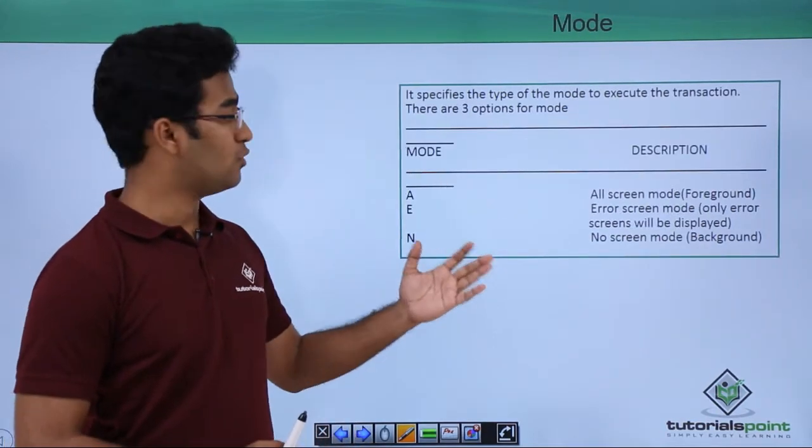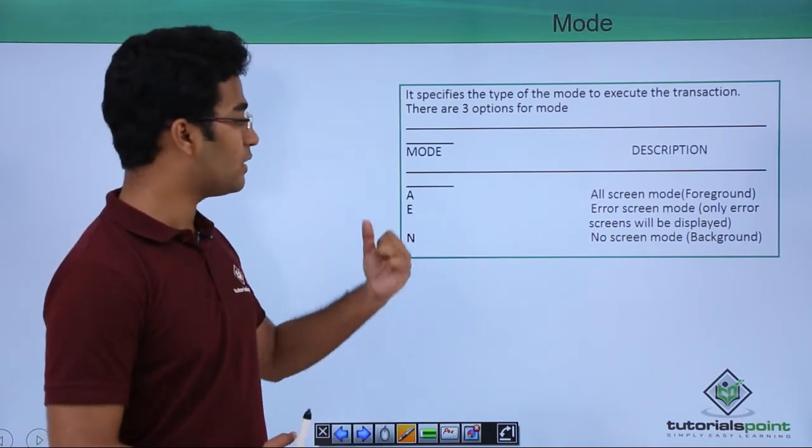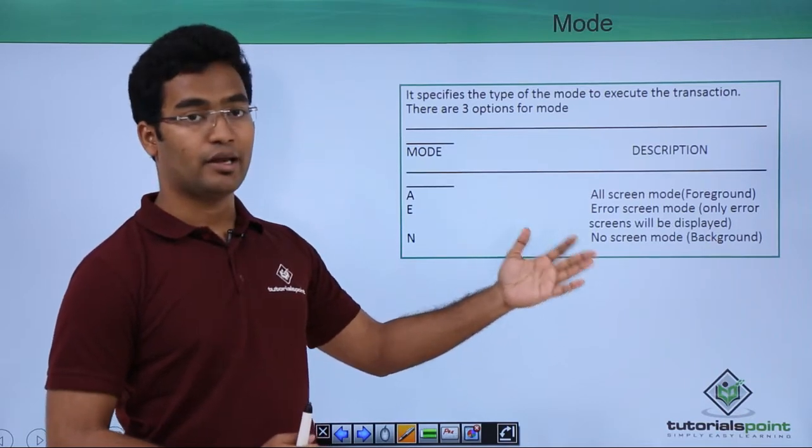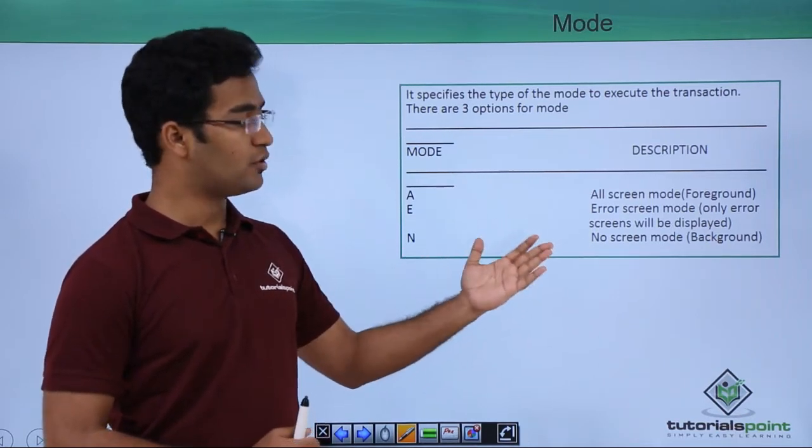Then we have the mode. Here we have three types of mode: A, E, and N. A stands for all screen mode, E stands for error screen, and N stands for no screen mode.